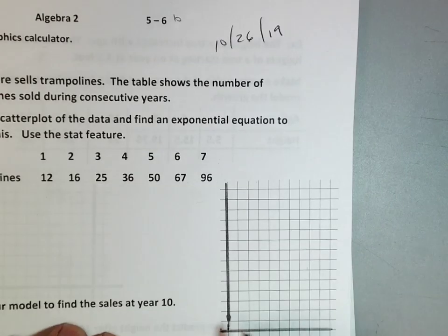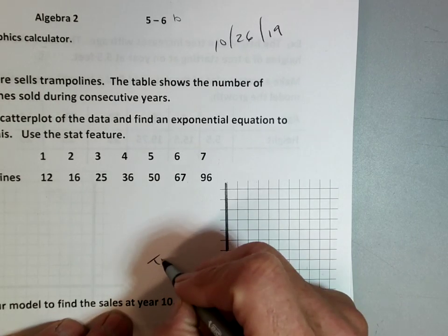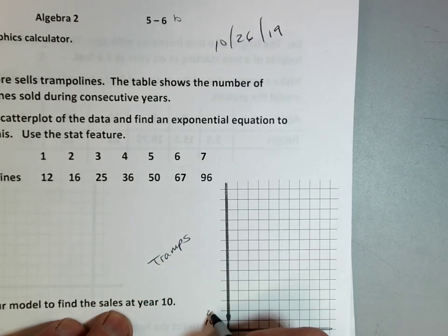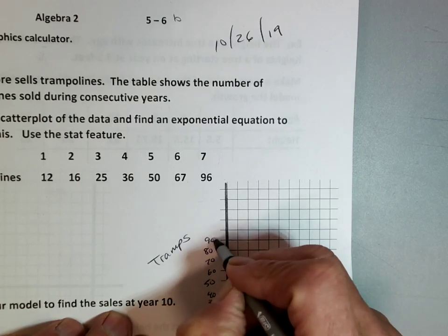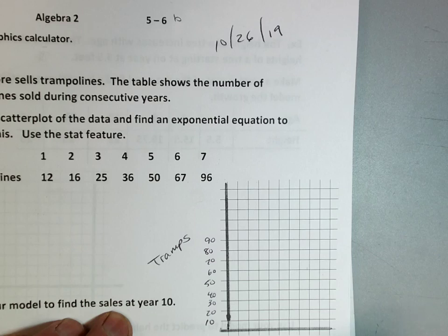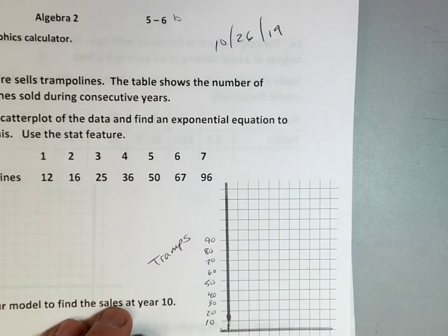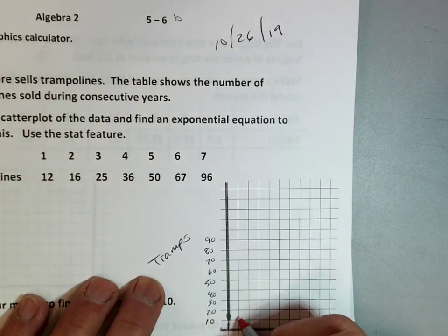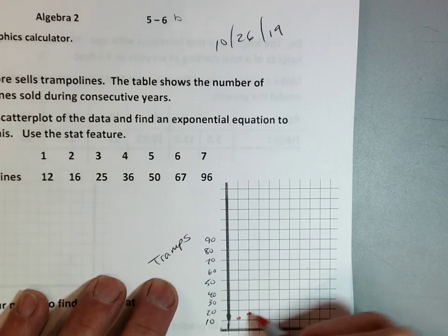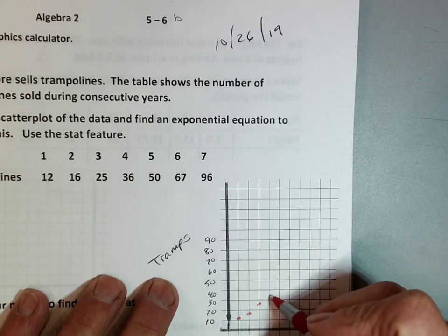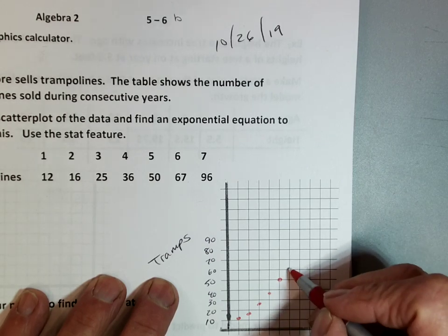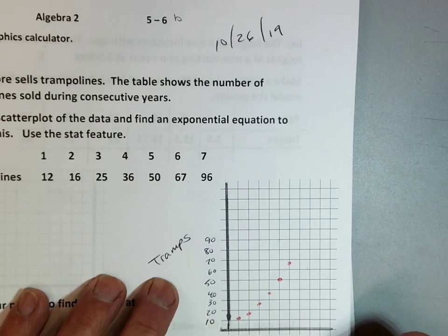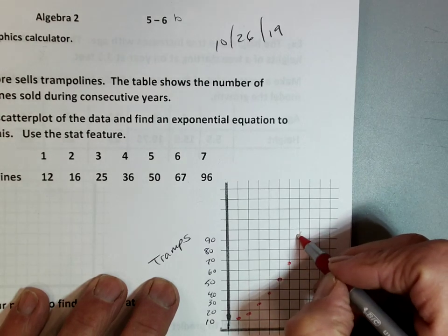Let's go ahead and put a scatterplot. I'll probably go by tens on my Y. This is going to be my trampolines. This is going to be years. And then I'm going to go ahead and graph this in. Year one is about 12. Year two is 16. Year three is 25. Four is 36, about there. Five is about 50. Yeah, it looks like it's starting to curve, doesn't it? Six is 67. Seven is about 96. It looks like it's a curve, doesn't it?